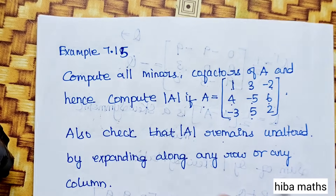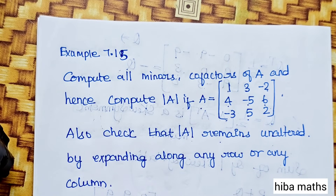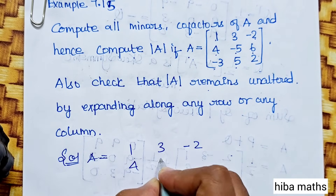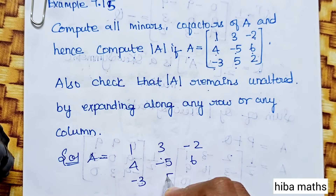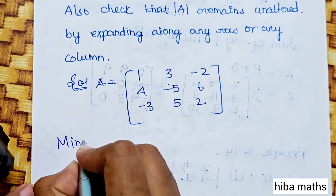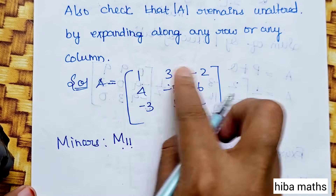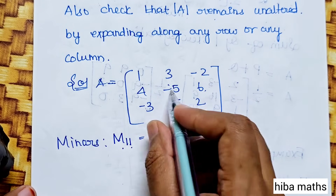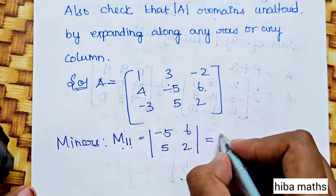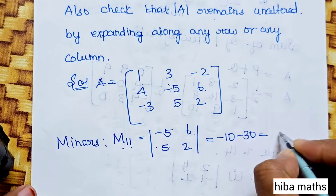In solution, A equals [1, 3, -2; 4, -5, 6; -3, 5, 2]. For M11 (first row, first column), the 2 by 2 sub-matrix is [-5, 6; 5, 2]. M11 equals (-5)(2) minus (6)(5) equals -10 minus 30 equals -40.